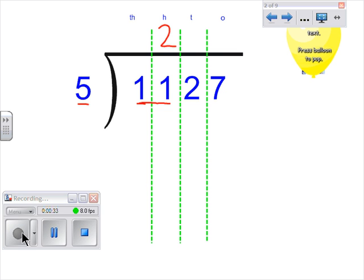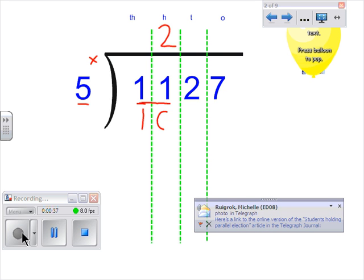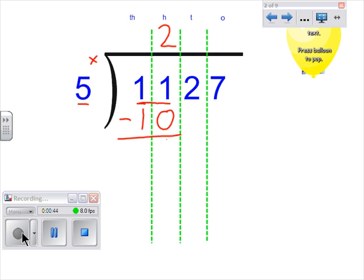2 times 5 is 10. If I was to subtract those two numbers, subtract 10 from 11 and we have 1.